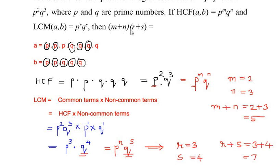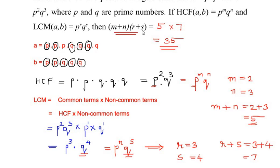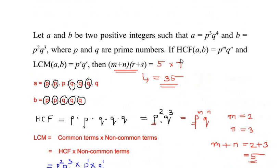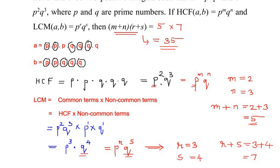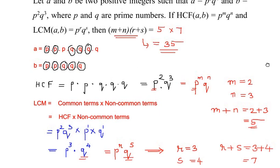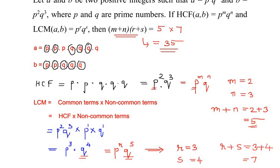So finally, m plus n times r plus s equals 5 multiplied by 7, which gives us 35. So the value of m plus n times r plus s is 35, and that is the required answer. I hope you understood all the steps and liked the video. If you are enjoying my videos, please like, share, and subscribe to my channel. Thank you for watching.